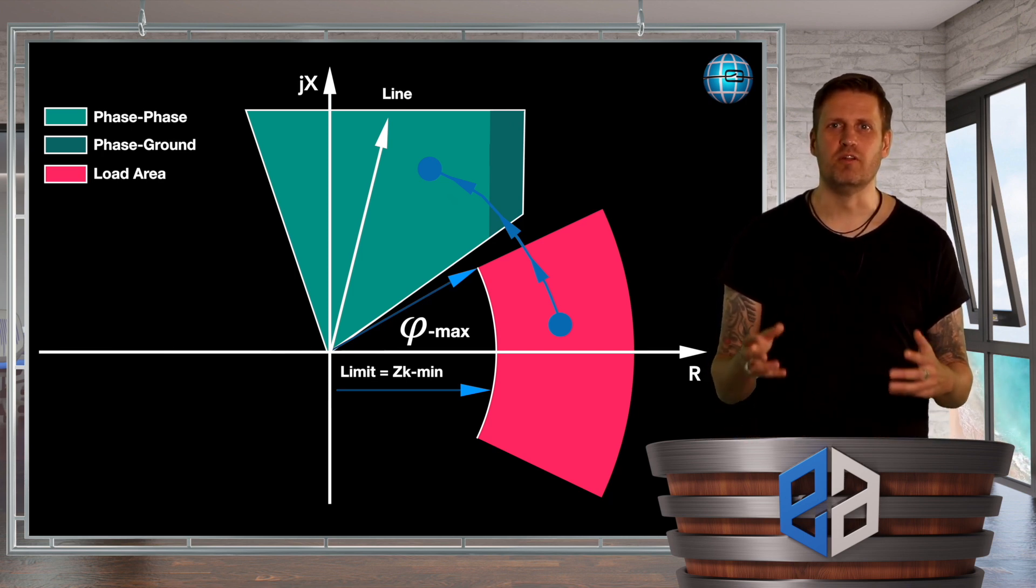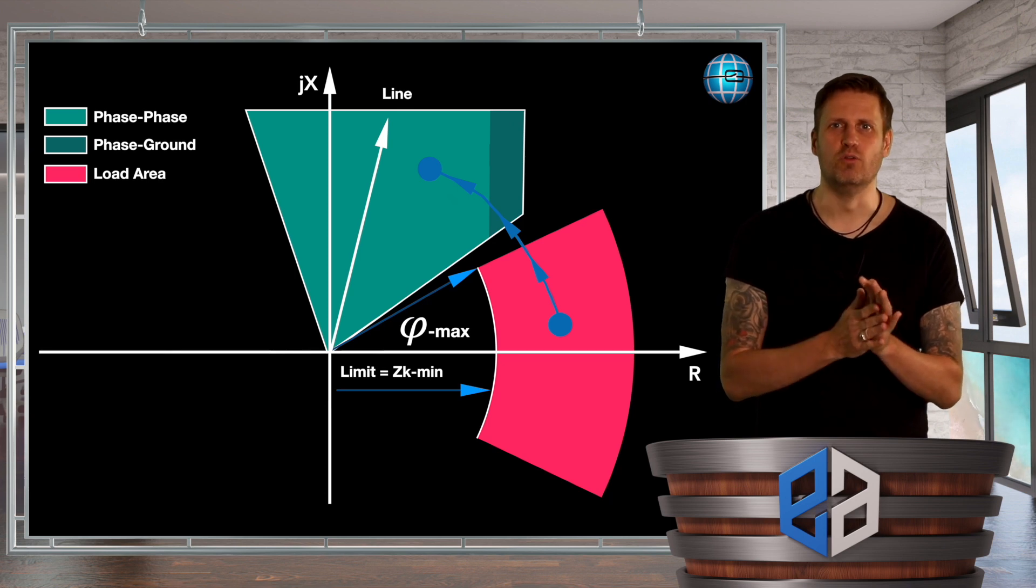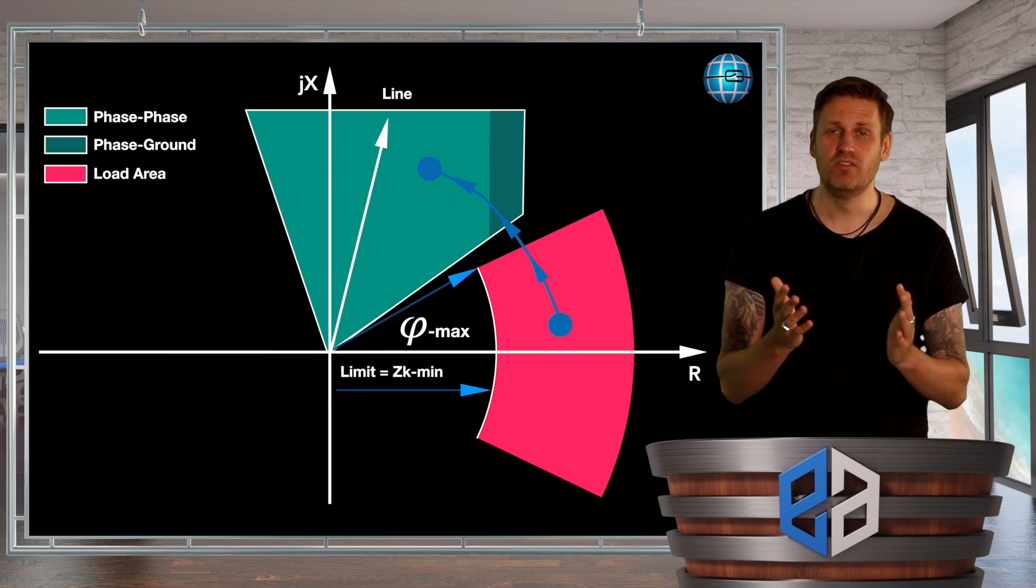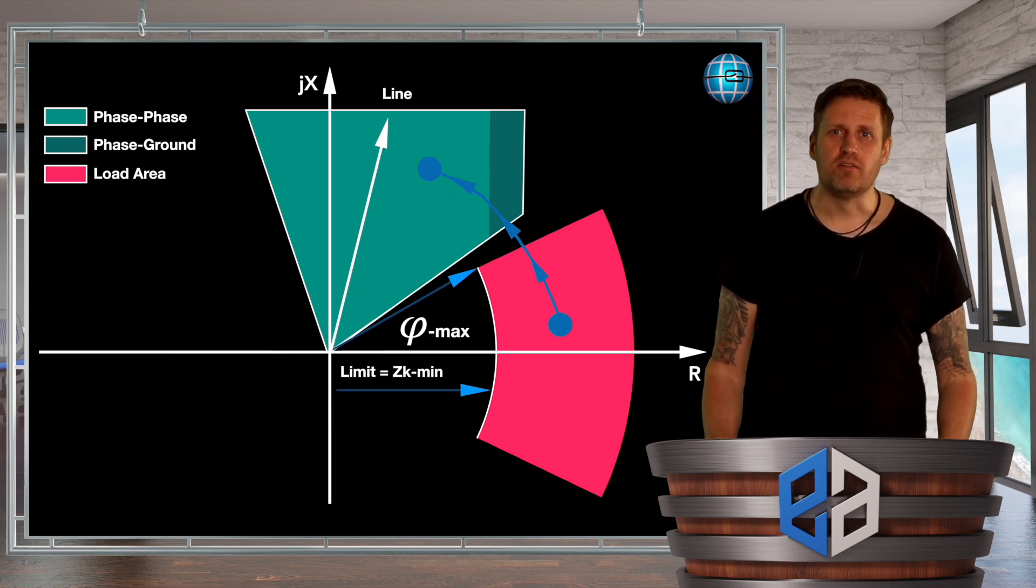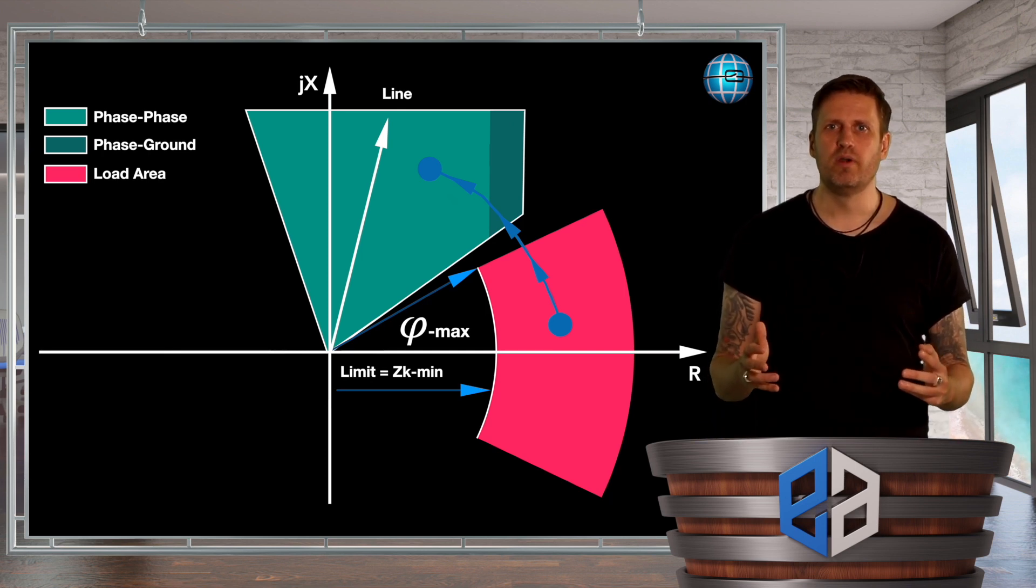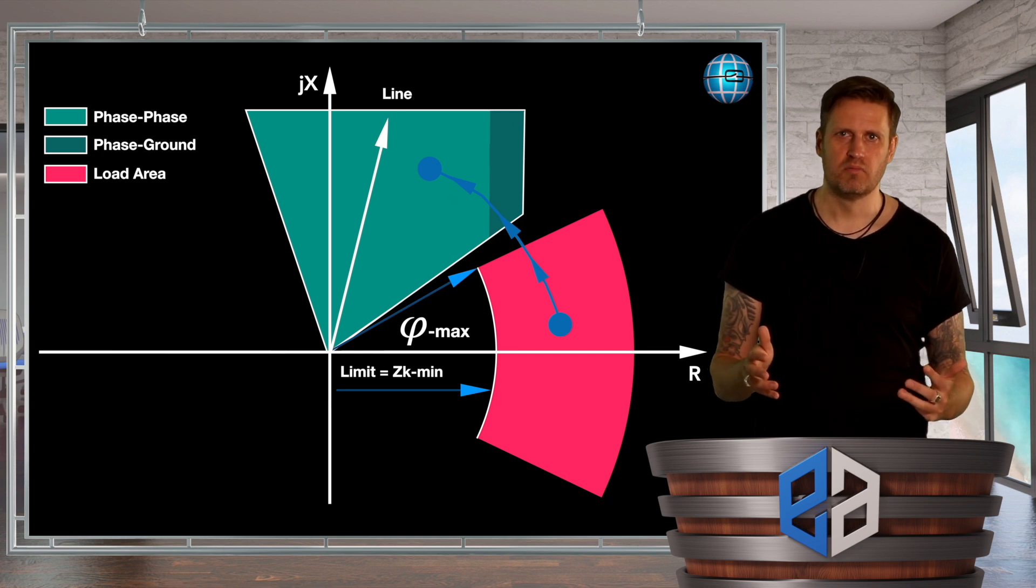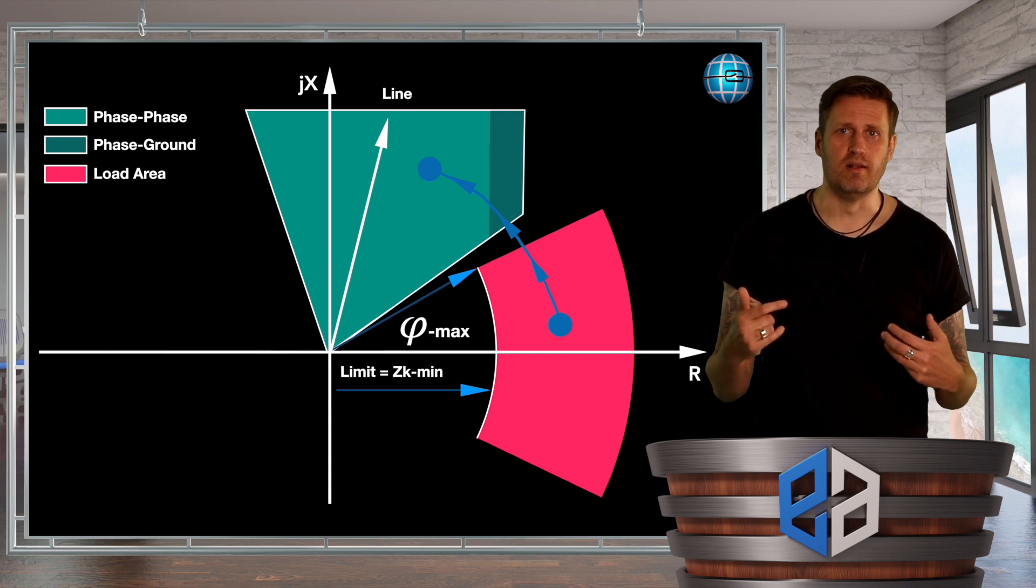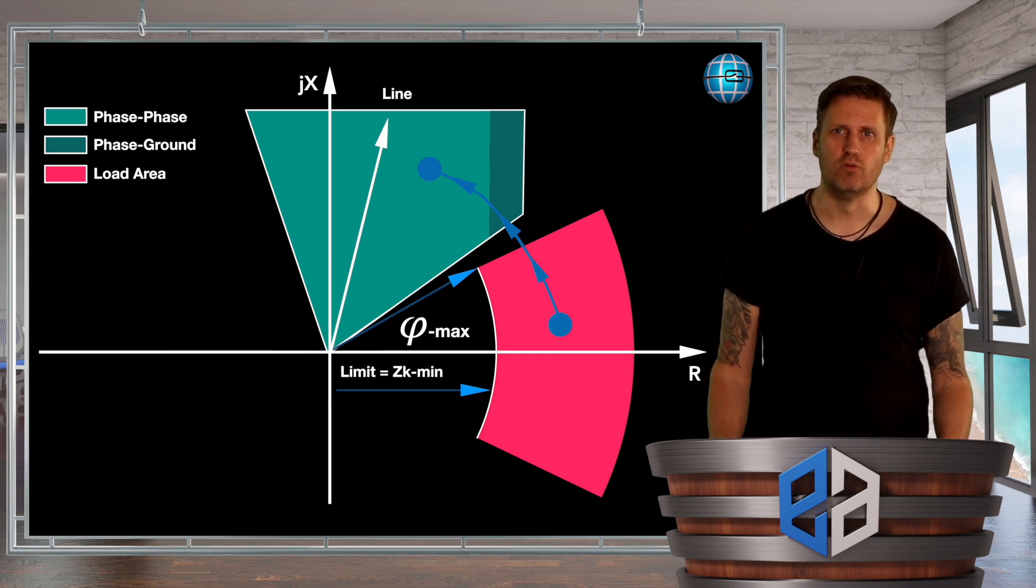So the load consists of a positive sequence system and if it's not completely symmetrical it may have a negative system. A zero component, on the other hand, is impossible. The zero sequence system only appears in the event of a fault with ground contact. But guess what? In practice the load cutout is activated for the face-to-earth or face-to-ground loops as well. The reason for this? In the event of a single phase tripping of neighboring lines, zero sequence systems can be coupled. It is now important here that we have also activated the load cut for the face-to-earth loops.